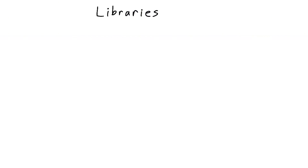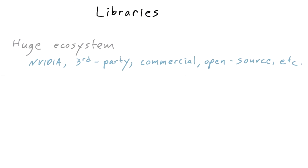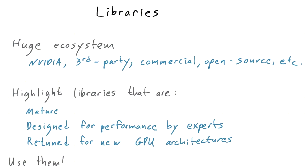Let's shift gears and talk about ways to avoid programming in the first place. There are many libraries available for CUDA — more come out every day. Some are developed by NVIDIA, some by third parties. There are open source libraries and commercial products. The libraries I'm going to talk about are, for the most part, fairly mature. They're designed and optimized for performance by experts, and they get tuned up and re-released every time a new GPU architecture comes out. So if you can use these libraries, you should.